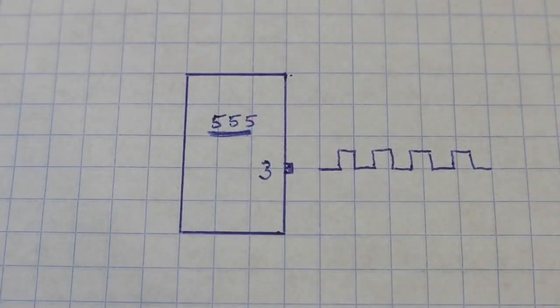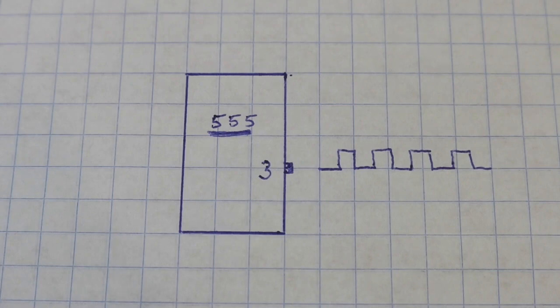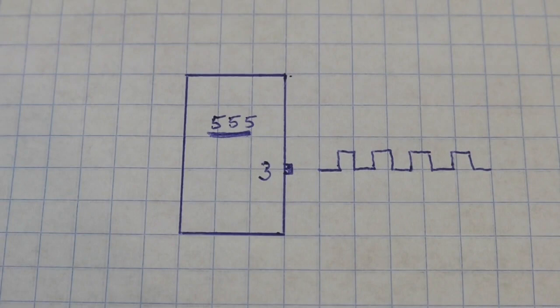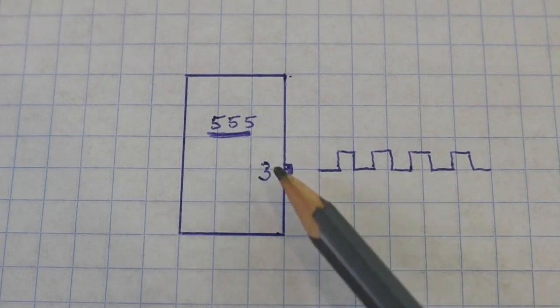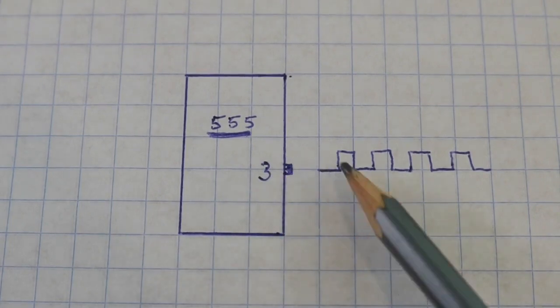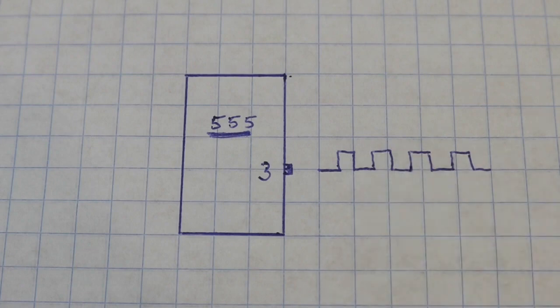This circuit is based on a characteristic of the 555 timer that is not very well known. As you may know, at pin 3 we have an output that is this train of pulses.